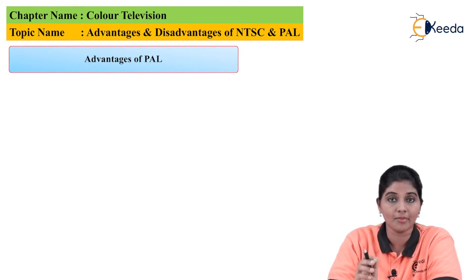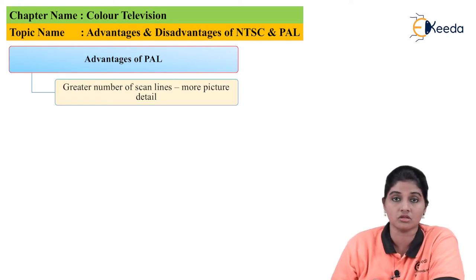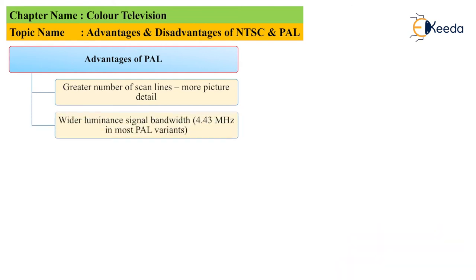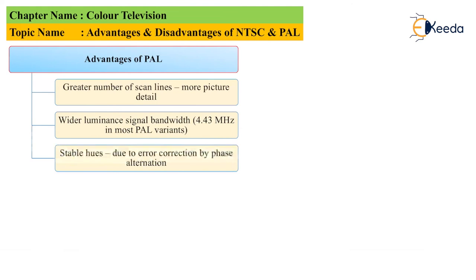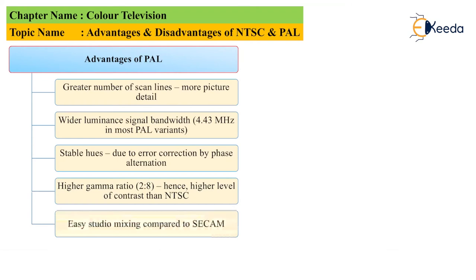Let's see the various advantages provided by the PAL system. The first advantage is a large number of scan lines, therefore more picture detail is provided on the screen. The next advantage is a wider luminance signal bandwidth of approximately 4.43 megahertz. It provides stable hue because the phase alteration error correction shifts the phase in the picture subcarrier, avoiding hue variation. The next advantage is a higher gamma ratio of 2.8 and therefore a higher level of contrast as compared to NTSC, and easy studio mixing which is simpler compared to SECAM.